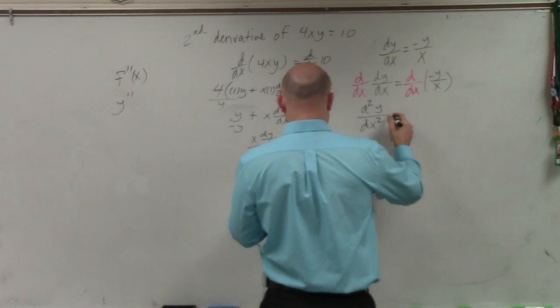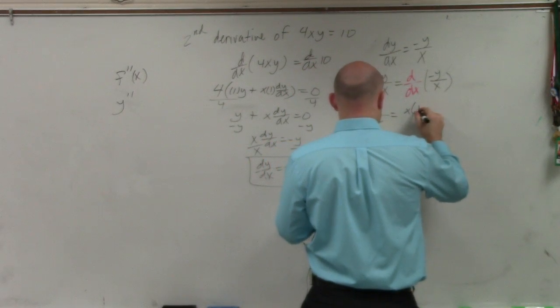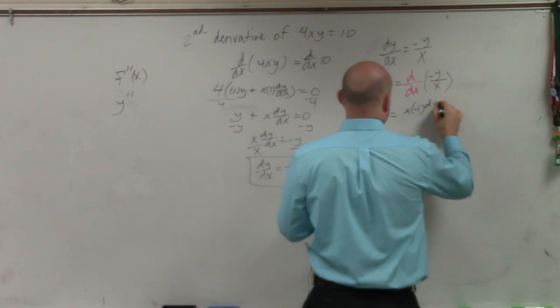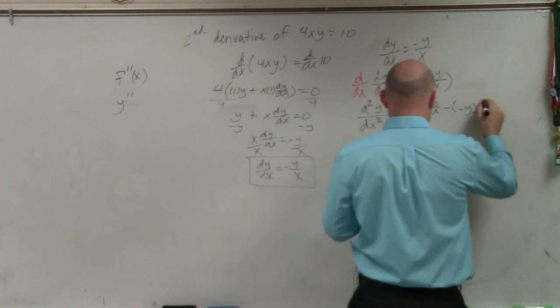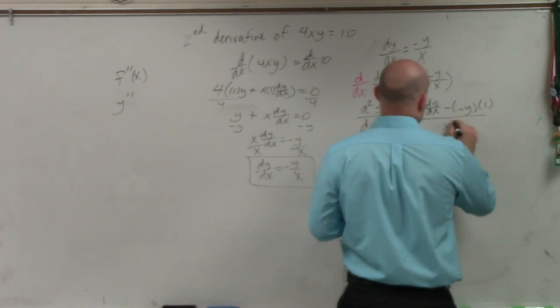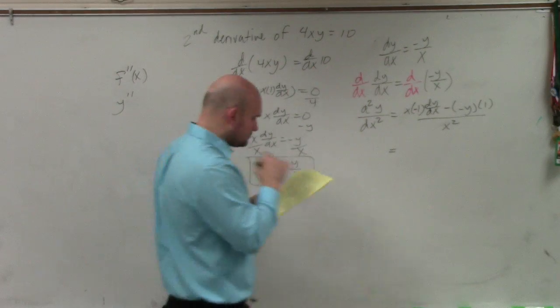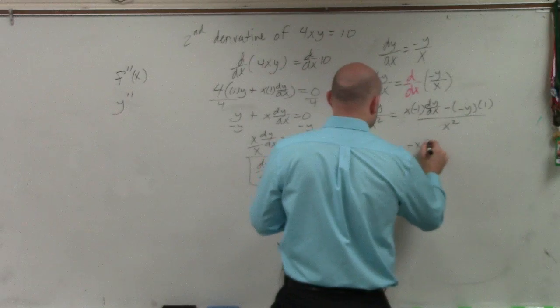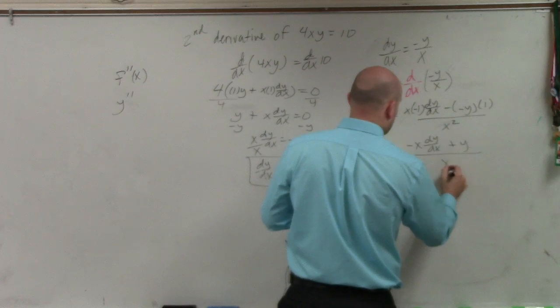So by using the quotient rule, I end up with x times negative 1 dy over dx minus negative y times 1 all over x squared, which gives me negative x dy over dx plus y over x squared.